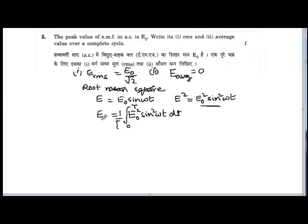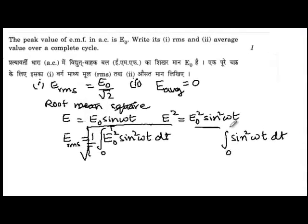And finally to get the RMS value we need to take the square root of this value that we get after integration. Now to integrate this, you can see that E naught is a constant, so we need to integrate sin² ωt dt from 0 to T.